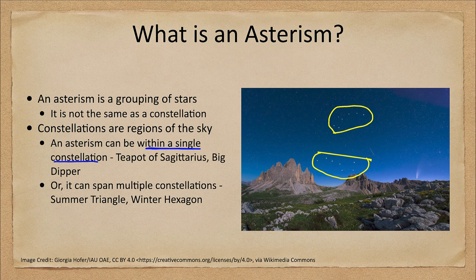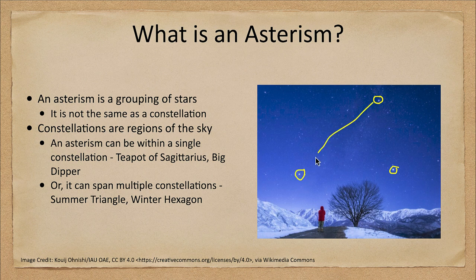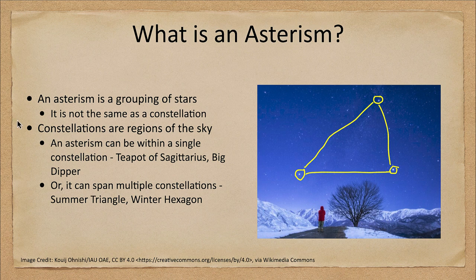However, that is not a requirement. We can also have asterisms which span multiple constellations — it is just a pattern of stars that we see in the sky. Here we see what is known as the Summer Triangle. There are three bright stars: Vega, Deneb up at the top, and Altair off to the left. These form a large triangle in the sky, visible in late summer to early fall, giving it its name as the Summer Triangle. Each of these bright stars that make up the triangle is the brightest star in its own constellation.